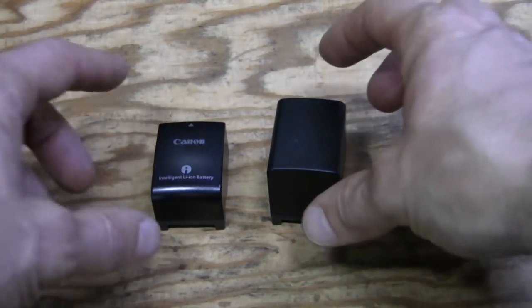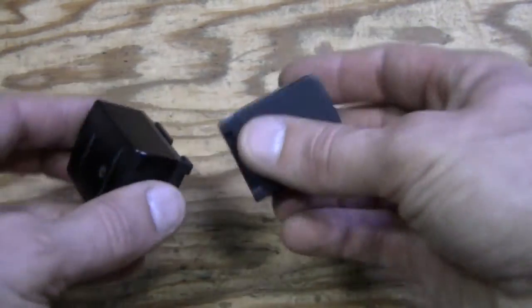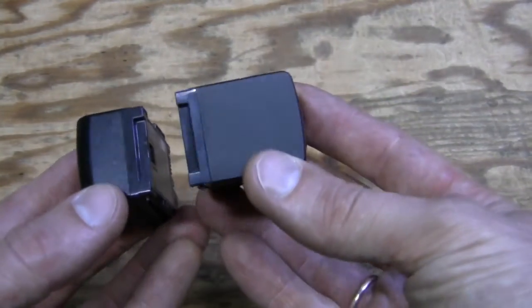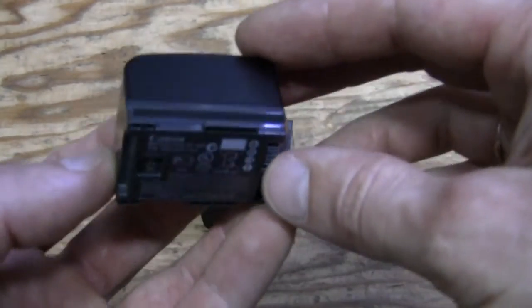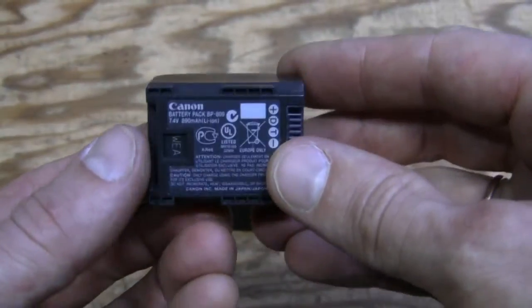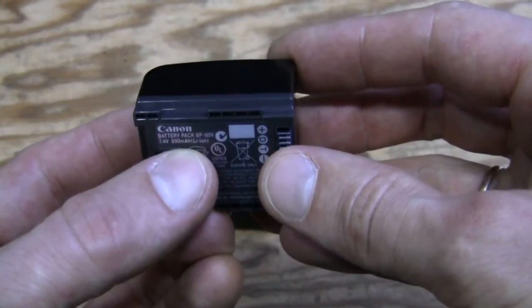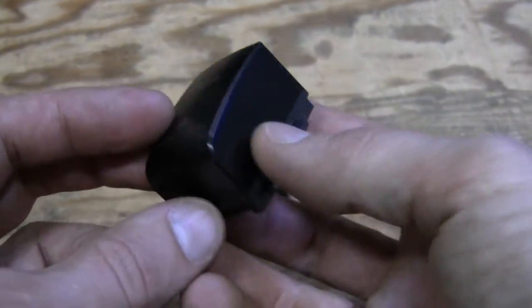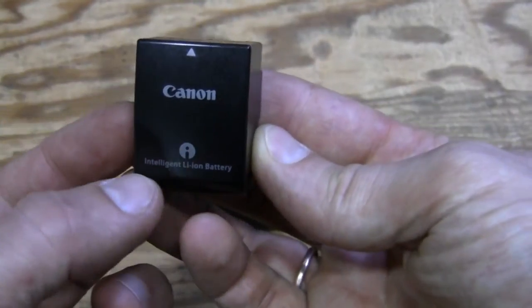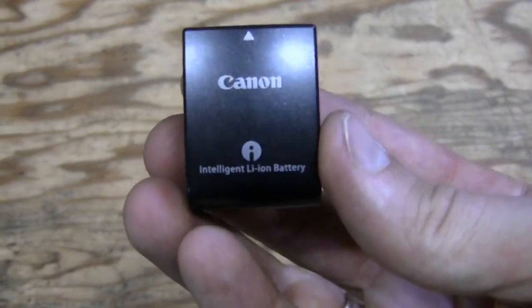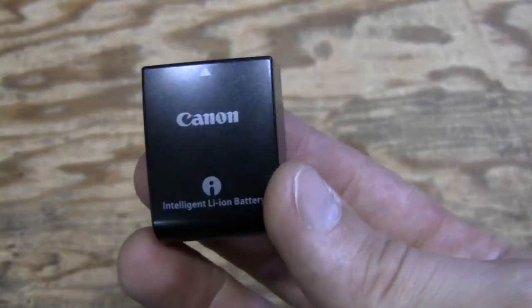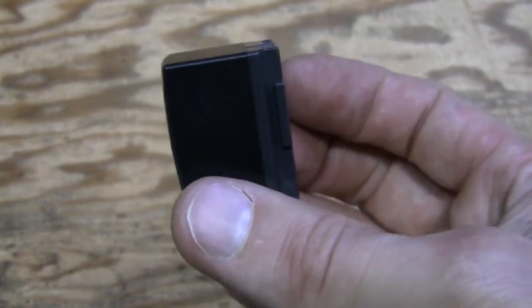So here they are, side by side. As we can see this guy is quite a bit thicker. And this standard Canon battery is rated at 890 mAh. And because of this feature, which is called Intelligent Lithium Ion, we can see that estimated runtime on the screen, which I showed before. The camcorder can talk to the battery and they somehow figure out this estimated runtime.